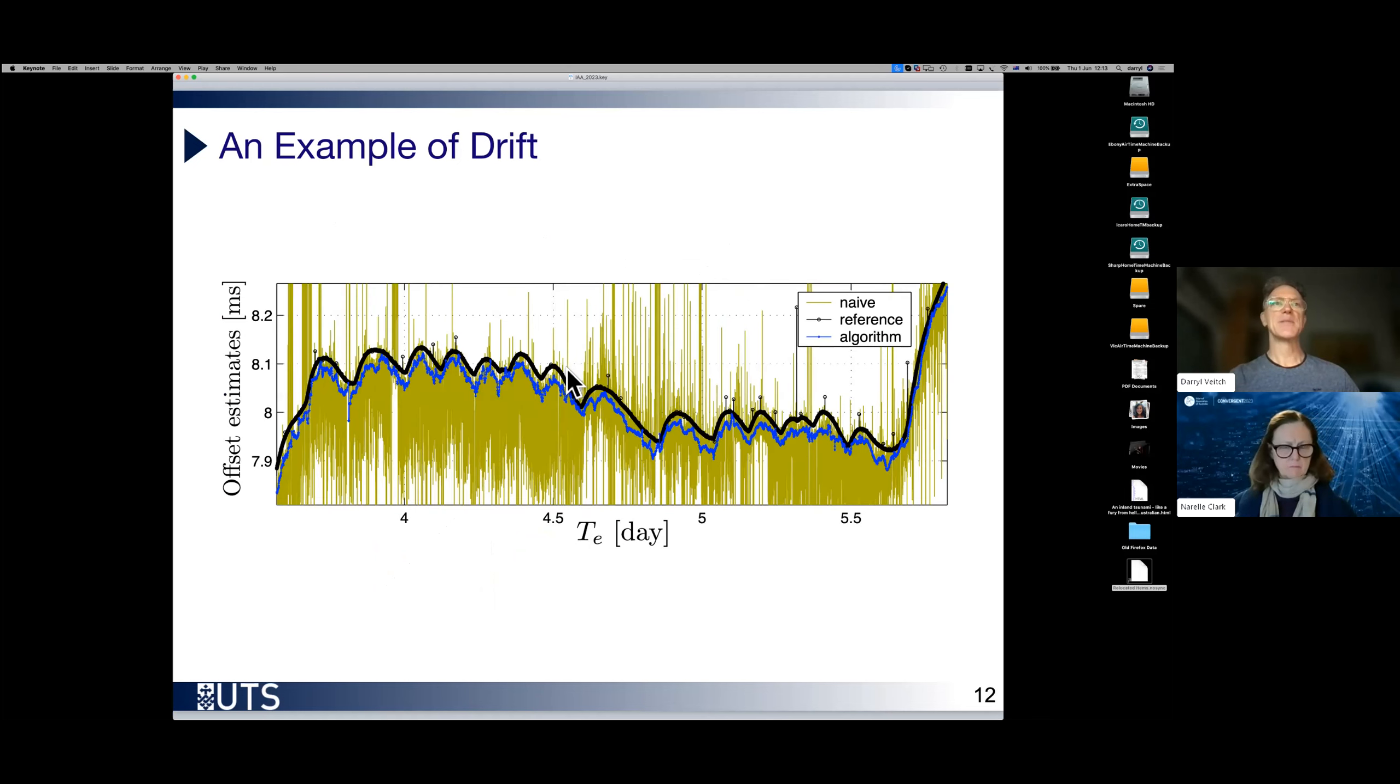Here is an example of that. This black line is a zoom in on some data showing effectively this temperature generated drift. What the green is is raw data coming in in packets from a server. And the blue line is the algorithm's attempts to filter that green to approach the black.